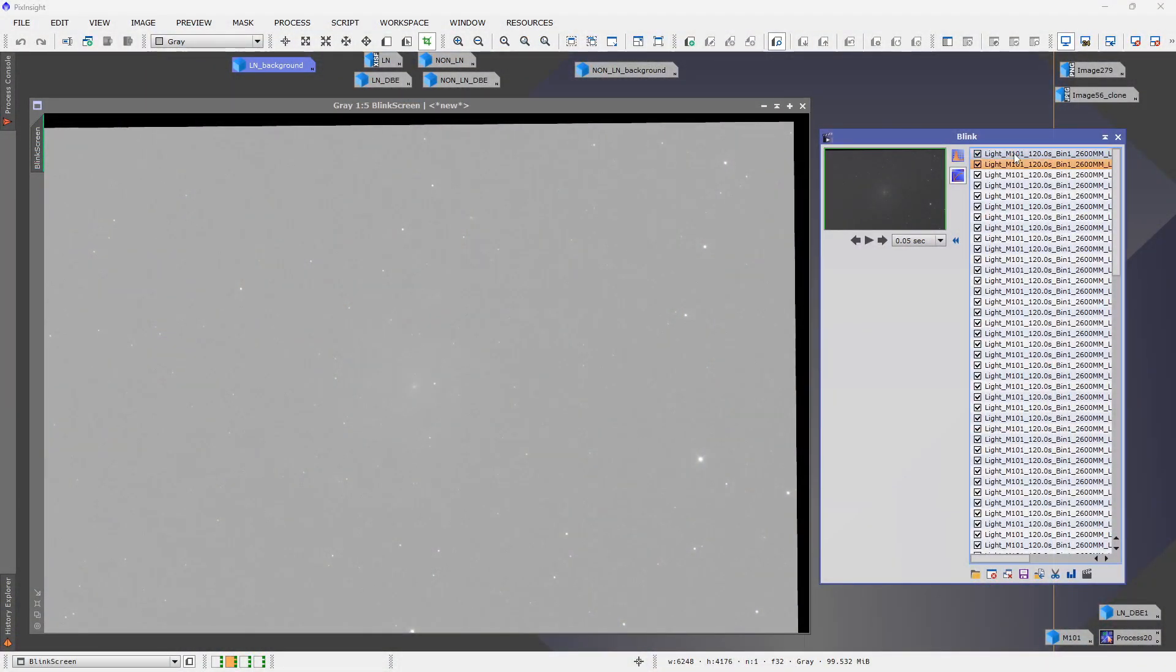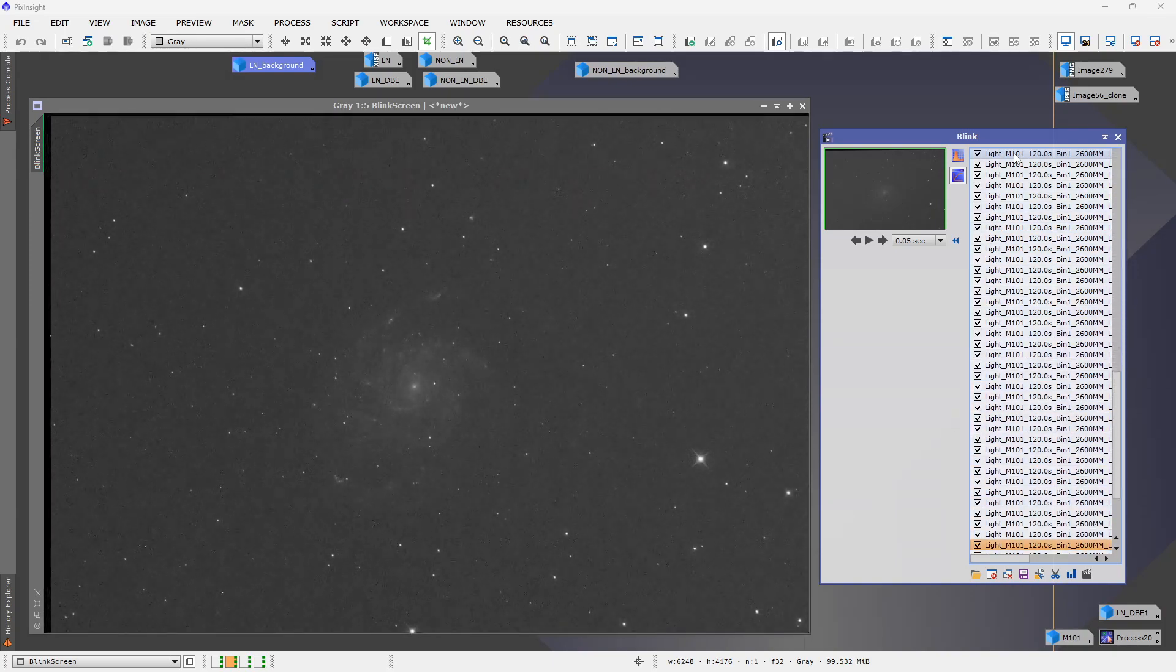Tip number seven, using local normalization during the pre-processing of your sub exposures. This feature is now baked into the weighted batch pre-processing script in PixInsight. Essentially what it does is simplify gradients in your calibrated sub exposures by making the data statistically compatible at the pixel level. So when you're taking sub exposures from light pollution, as the target moves across the sky, your sub exposures are going to have different brightness levels in the background. Local normalization normalizes the background of each subframe using a reference image that's created from an integration of the best frames in your data set. Ultimately what this does is it makes it easier for the background extraction process to remove gradients.